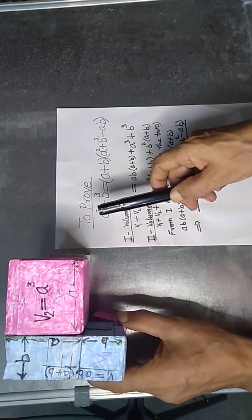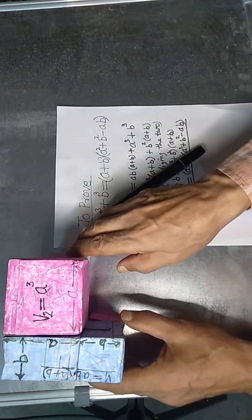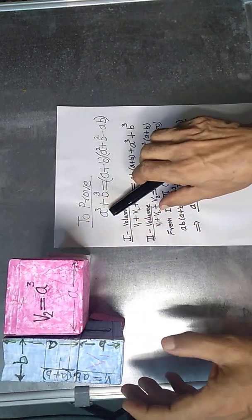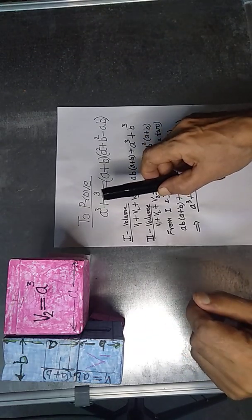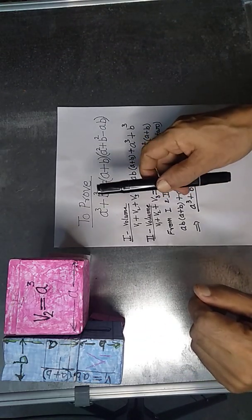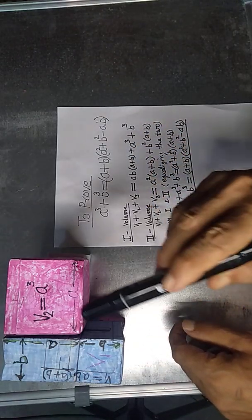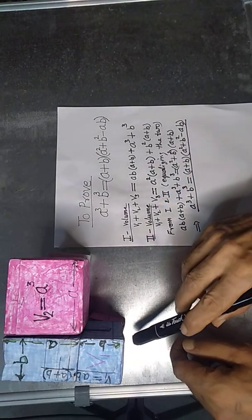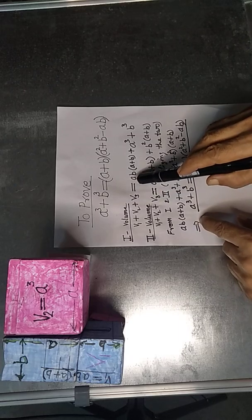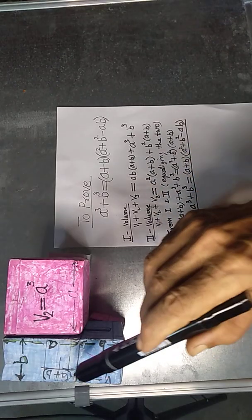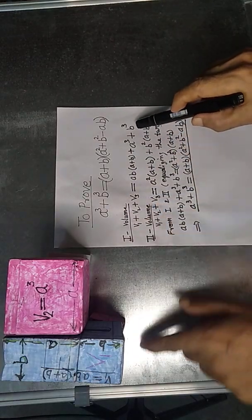The whole structure can be calculated by its volume in two ways. In the first way, we have volume V1, volume V2, and volume V3. So V1 plus V2 plus V3 is equal to ab into a plus b, plus a cube, plus b cube.